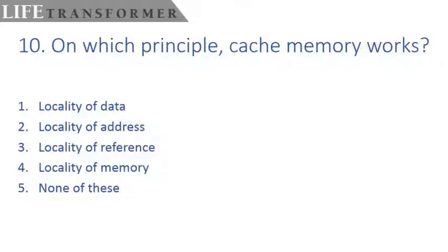This is an important question. On which principle cache memory works? Let's move to the answer. Cache memory works on the locality of reference principle. In locality of reference principle, related storage locations are frequently accessed depending upon the memory access method.